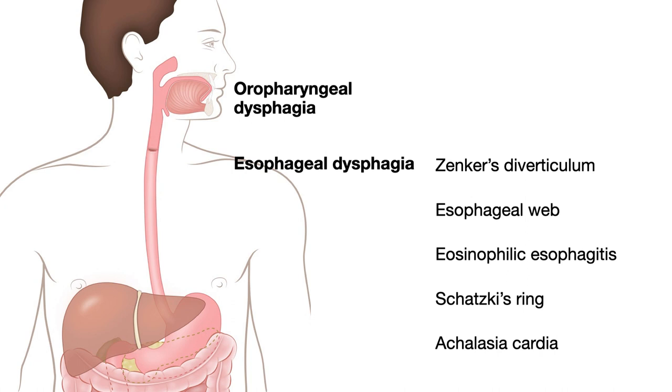Once it enters the esophagus, it has to go down smoothly into the stomach. There are a number of reasons difficulty with swallowing can arise in the esophagus. Among them, Schatzki Ring is one of the causes.